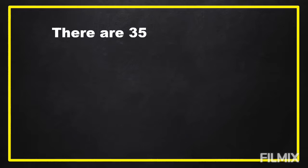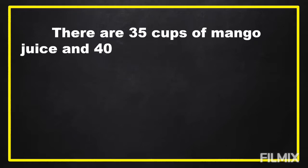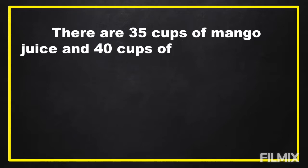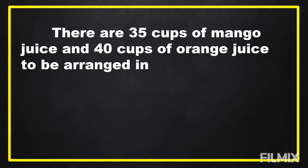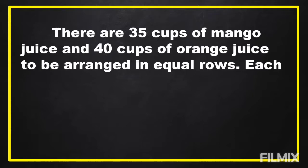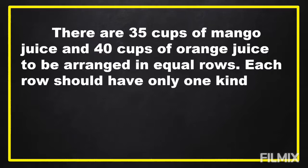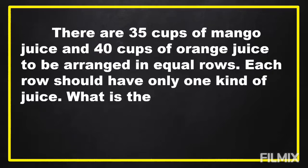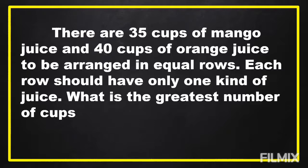We're going to answer our first problem. There are 35 cups of mango juice and 40 cups of orange juice to be arranged in equal rows. Each row should have only one kind of juice. What is the greatest number of cups that can be arranged in one row?